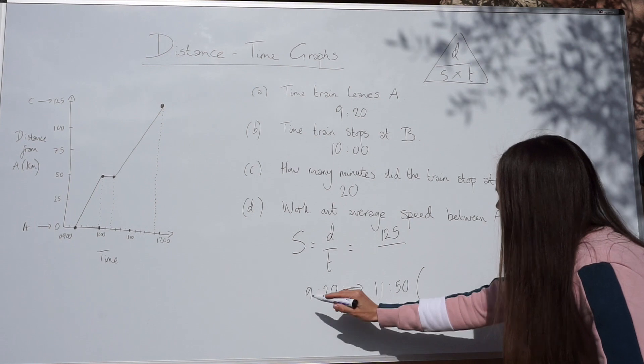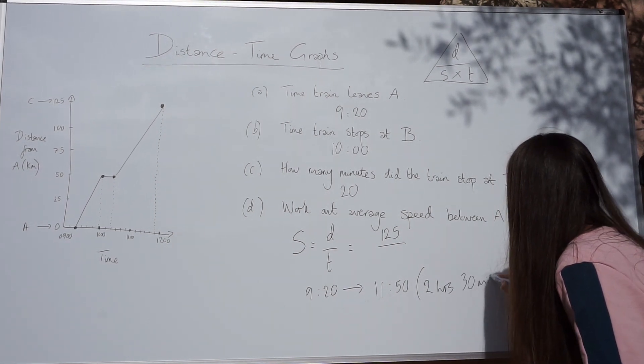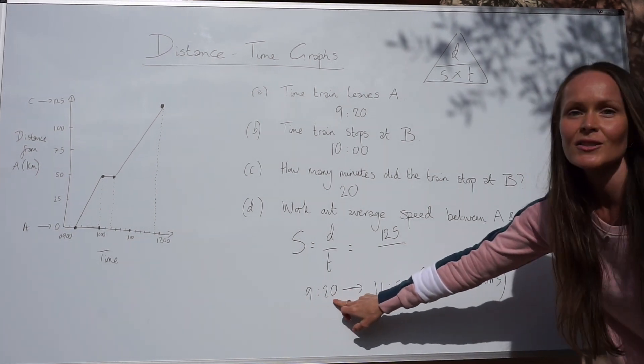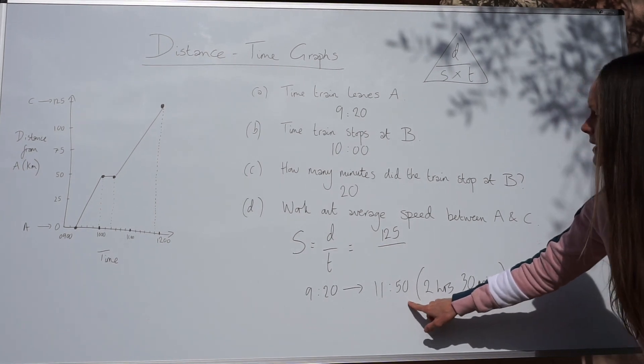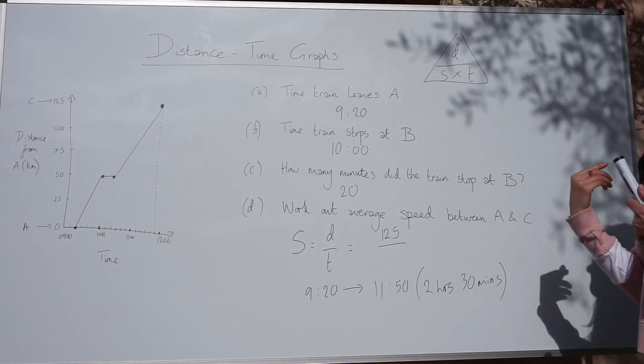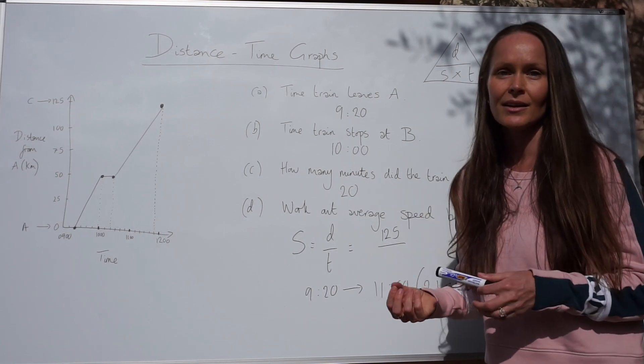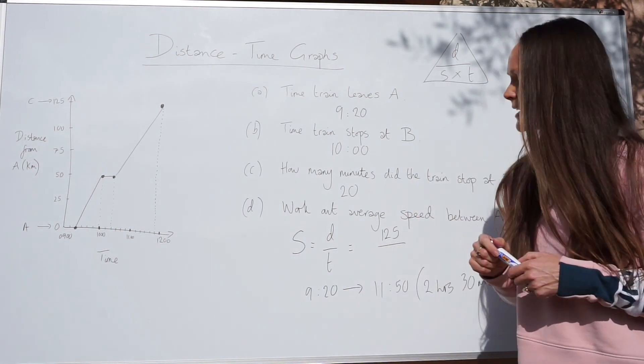So that makes a total of 2 hours and 30 minutes for the journey. 2 hours from here takes us to 11.20 and then another 30 minutes to 11.50. So because in the exam question, it asks for the average speed and the units are given in kilometres per hour, you need to make sure that you follow those units.